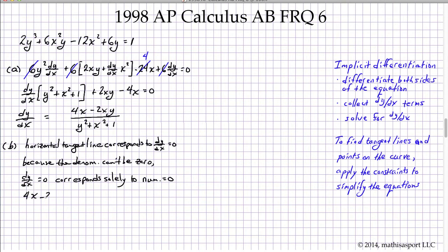Setting the numerator to zero: 4x minus 2xy equals zero. We can factor that to get 2x times (2 minus y) equals zero. So either x equals zero, or y equals 2, or both.